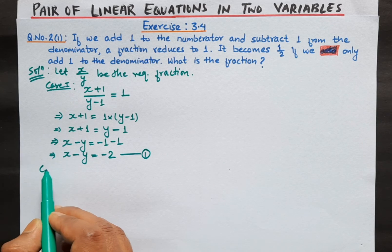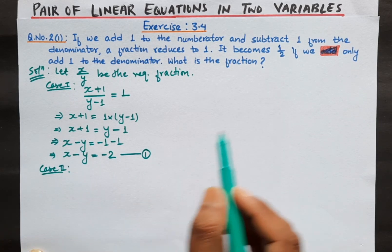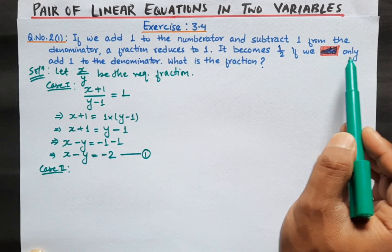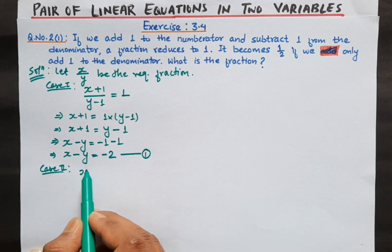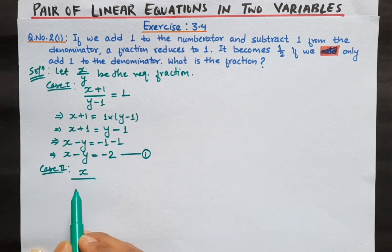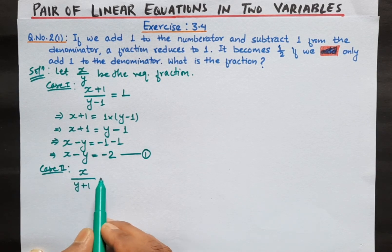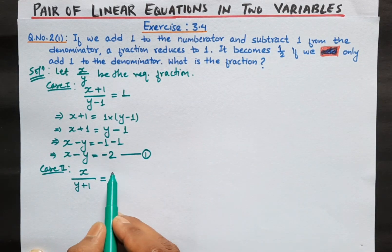Now let us see case number 2. In case 2, it becomes 1 by 2 if we only add 1 to the denominator. That means we have the numerator as it is, and if we add 1 to the denominator, that is y plus 1, the fraction becomes 1 by 2.